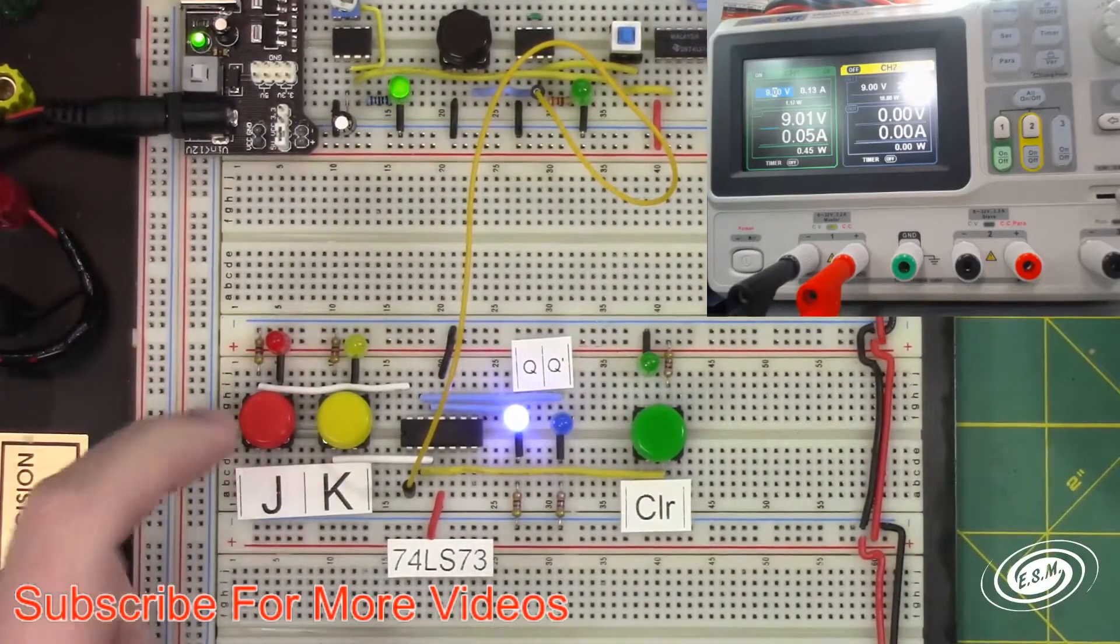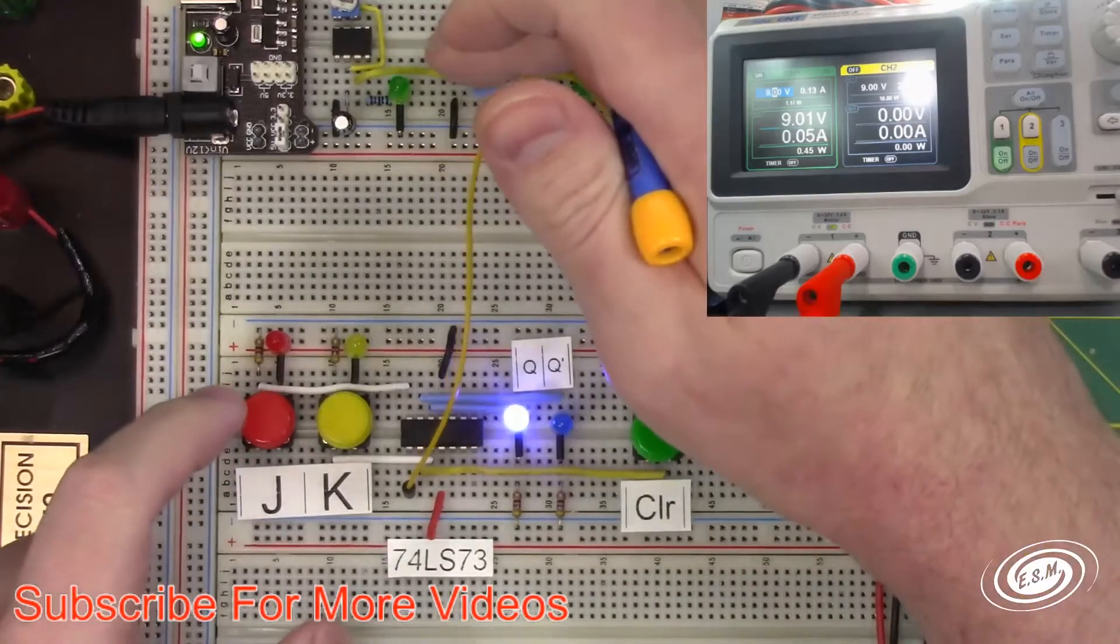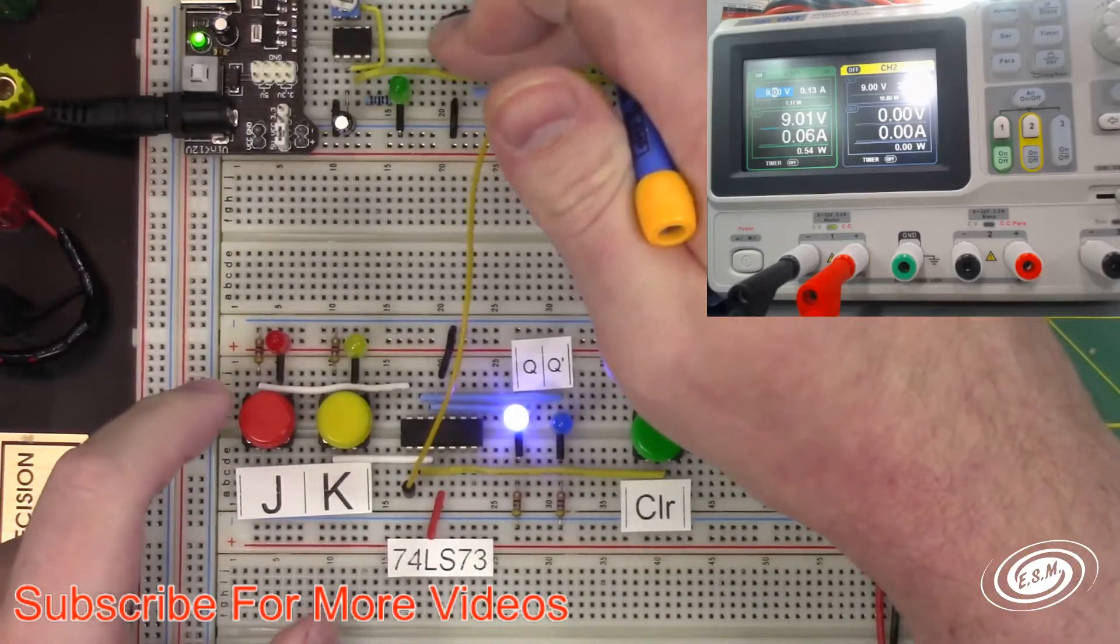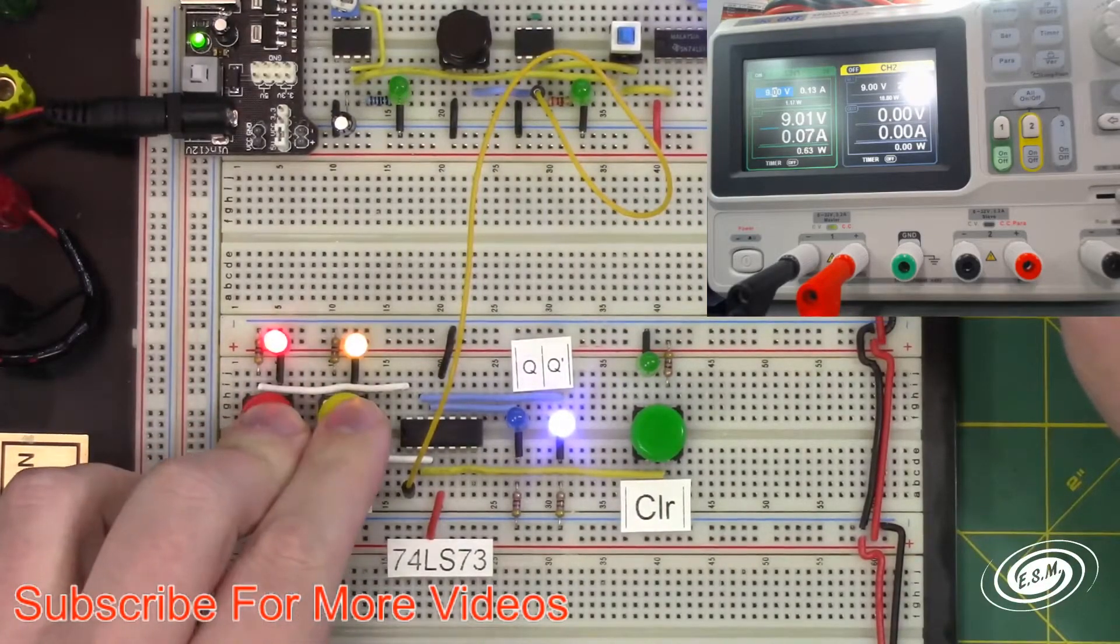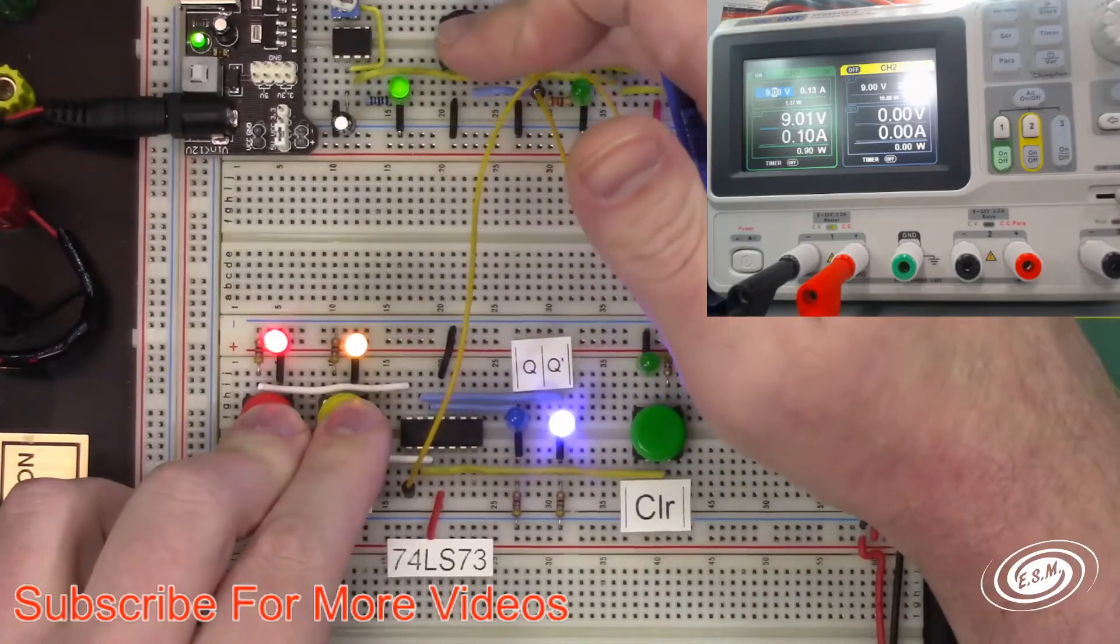And I can pulse the clock all I want - nothing happens. K has to be low. Now here's the interesting part: if J and K go high, it toggles.